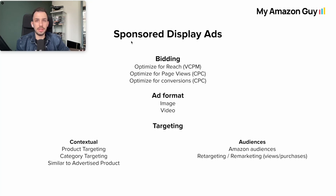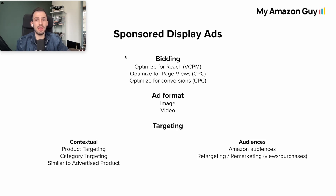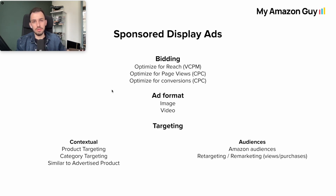There are three different advertising types in Amazon: Sponsored Product, Sponsored Brand, and Sponsored Display. Most of us are familiar with Sponsored Product and some with Sponsored Brand, but today we'll talk about Sponsored Display ads. My name is Orkun Desgun and I'm the advertising manager at My Amazon Guy. We have a chart that briefly explains how the Sponsored Display ad structure looks, and then we'll move to the advertising dashboard to see it in action.